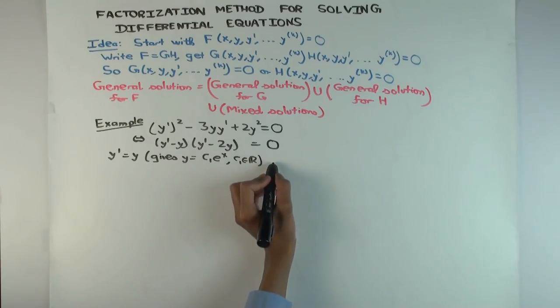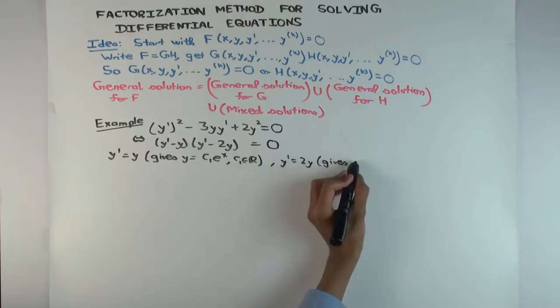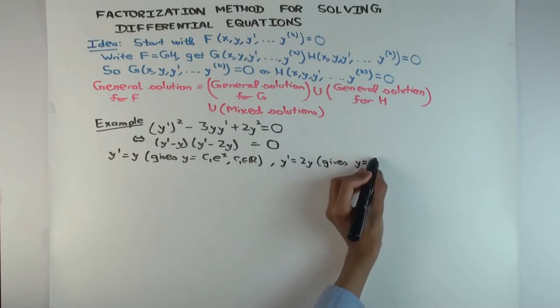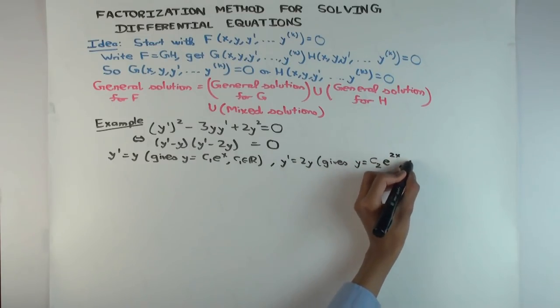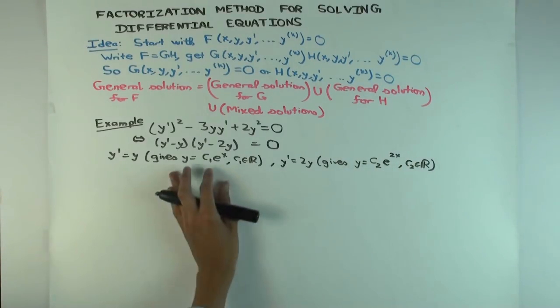And what's the other solution, y' equals 2y gives what? c₂ times e to the 2x.